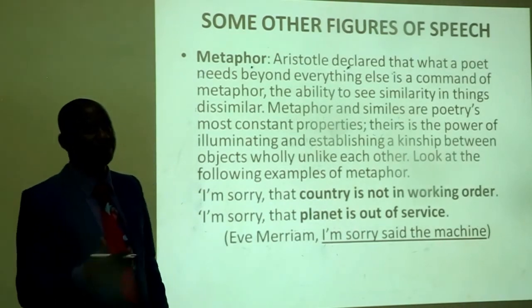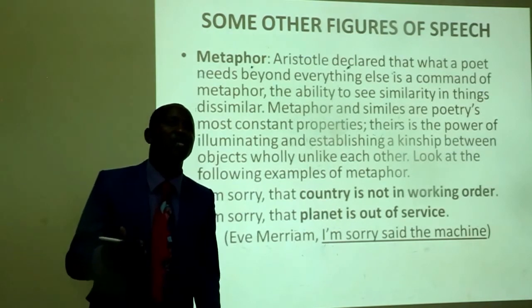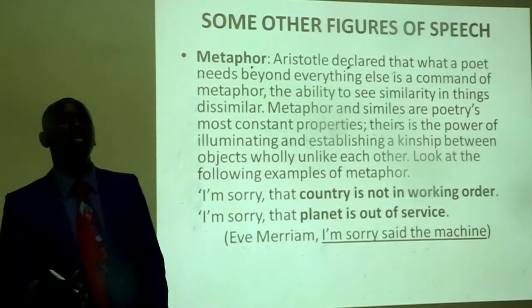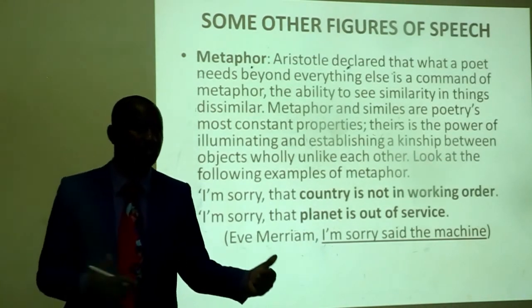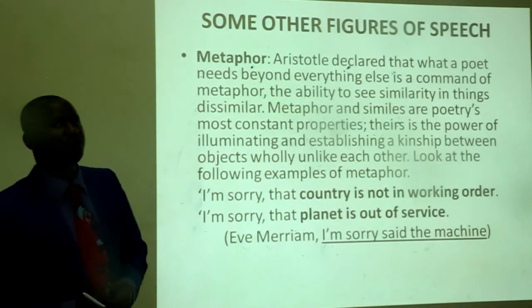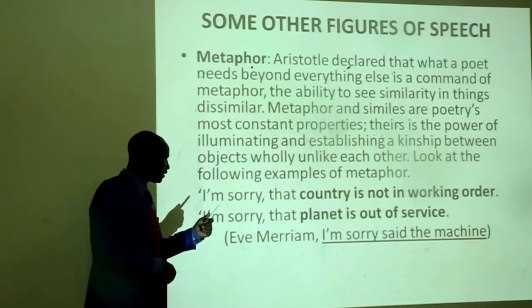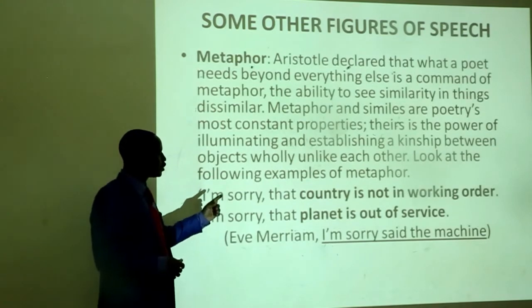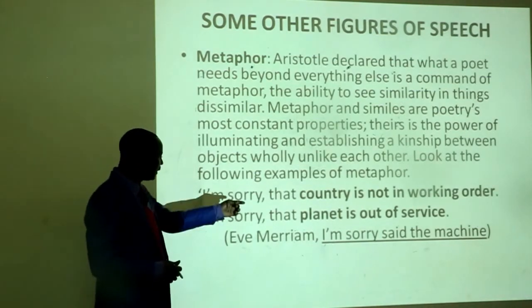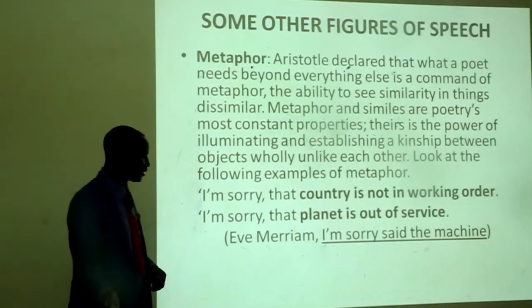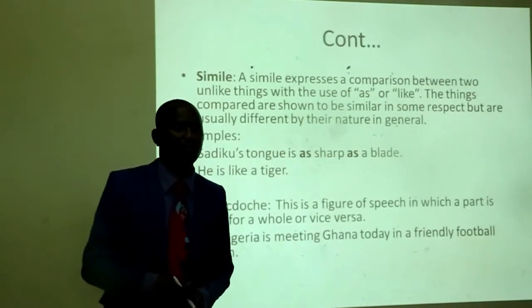Let us look at figures of speech like metaphor. Aristotle declared that what a poet needs beyond everything else is the command of metaphor — the ability to see similarity in things that are dissimilar. Metaphor and similes are poetry's most constant properties — theirs is the power of illuminating and establishing a kinship between objects only apparently unlike each other. Examples of metaphor: 'I'm sorry, that country is not in working order' — the country is likened to something that is not in working order. 'I'm sorry, that planet is out of service' — the planet is likened to something that is out of service. You can see how metaphor makes a direct comparison between two unlike things.